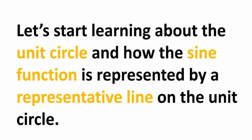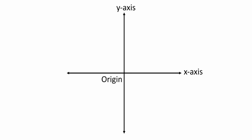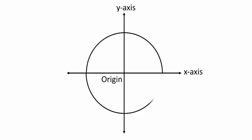Let's start learning about the unit circle and how the sine function is represented by a representative line on the unit circle. Here is the horizontal axis called the x-axis and the vertical axis called the y-axis, and both axes meet at a point called the origin. Let's draw a circle whose center is at the origin. This is the radius of the circle that makes an angle theta with the x-axis.